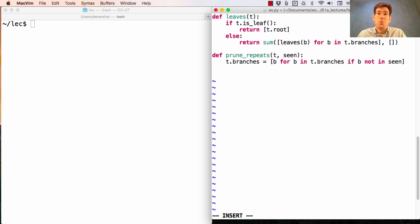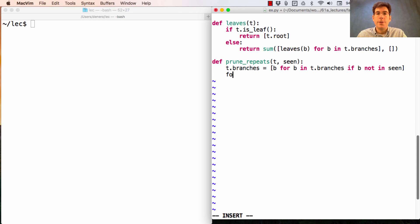Now this removes repeated branches, but it won't remove all the repeated subtrees deeper down into the tree. In order to do that, we need to recursively call prune repeats. So I'll go through all the b in t.branches, which is the updated set of branches where I've pruned away everything I've seen before, and I call prune repeats on the branch passing in the list of what I've seen.